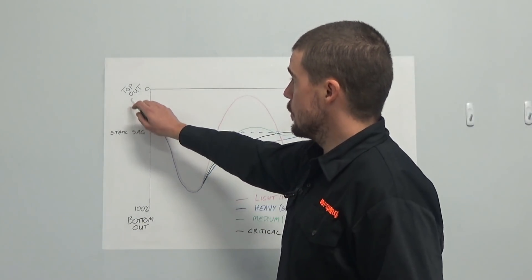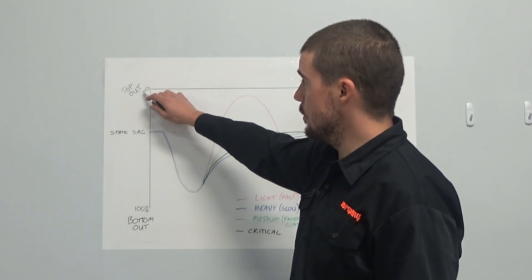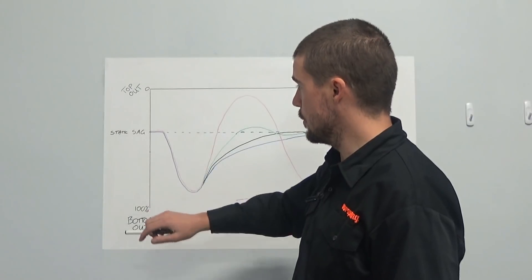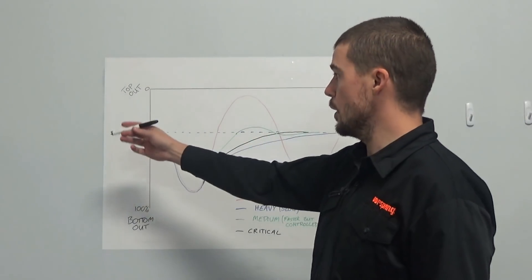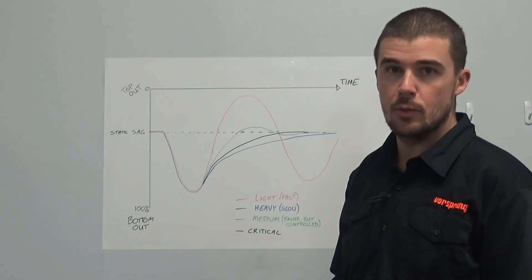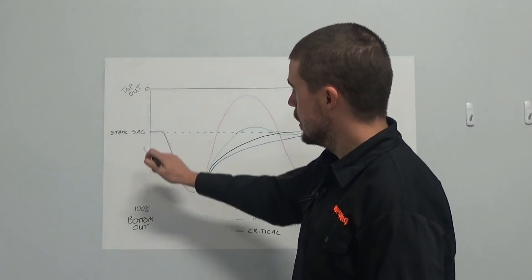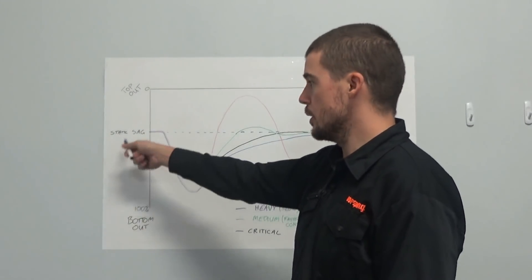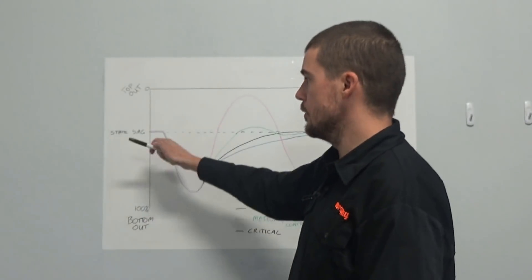So here we have a graph showing your suspension travel. This is zero, top out, bottom out. This is time. So as we're riding along in the direction of time, we start at our sag point. We can call it static sag, dynamic sag, however you want to look at it here.